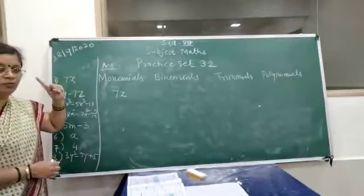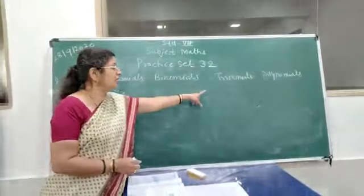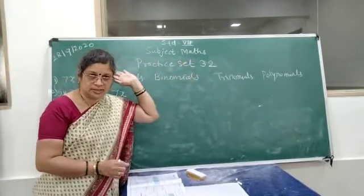Now monomial means 1 term, binomial means 2, trinomial means 3 and polynomial is more than 3.